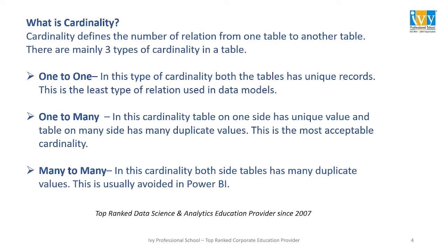Now let's see what cardinality is. Cardinality is also known as a relationship between the tables. Cardinality defines the number of relations from one table to another table. There are usually three types of cardinality while building a model.